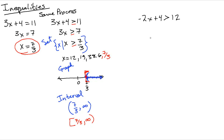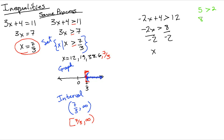Let's try a new problem: -2x + 4 > 12. Same process — subtract 4 to get -2x > 8, then divide by -2. We have to stop here, because this is where inequalities have an unusual thing happen. Notice: 5 > 2; if we multiply both sides by 3, we get 24 > 15. Now watch what happens if we make both of those negative.